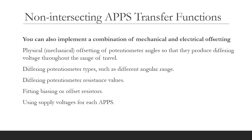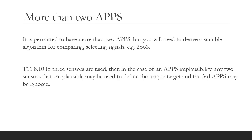Another method is to use potentiometers with different physical travel — for example a 90-degree pot and a 270-degree pot of the same resistance value would result in different transfer functions. You can implement non-intersecting APPS transfer functions using a variety of means: physically offset the potentiometers at different starting positions, use potentiometers with different angular ranges, use potentiometers with different resistance ranges, fit biasing or offset resistors on the high side or low side of the APPS, use different supply voltages for each APPS circuit, or a combination of these. The rules allow more than two APPS, but you'll need a suitable algorithm for comparing and selecting signals, e.g. a two-out-of-three algorithm.